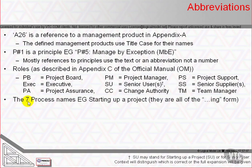The 7 processes are the most commonly abbreviated — for example, SU for Starting Up a Project. The process names all have an ING form, such as Starting Up a Project, Directing a Project, or Managing Stage Boundaries.